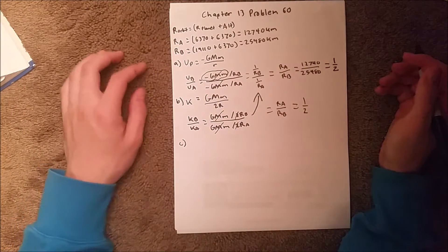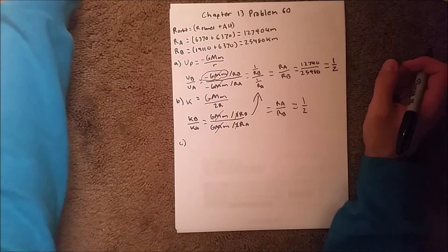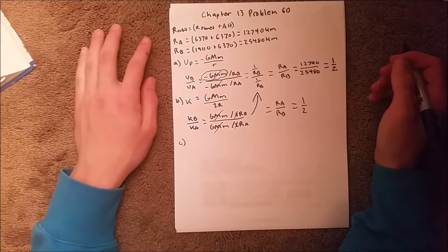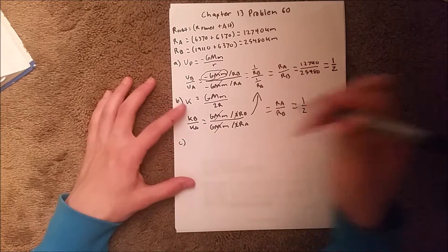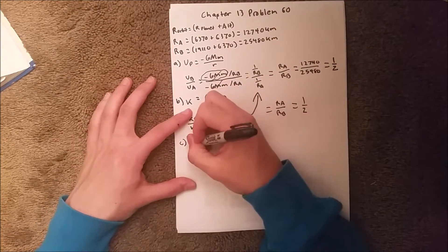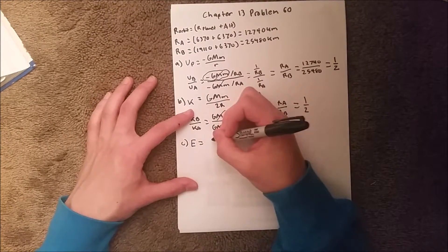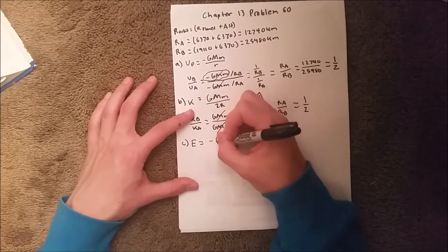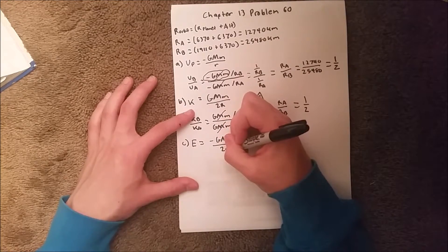Part C asks which satellite has the greater energy. So we know that energy is equal to negative G, M, M, over 2R.